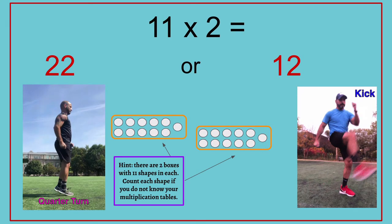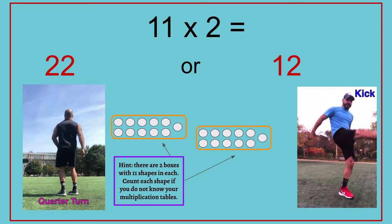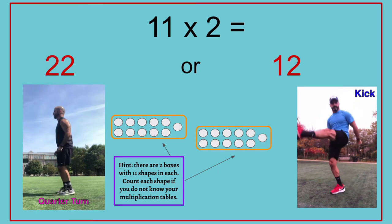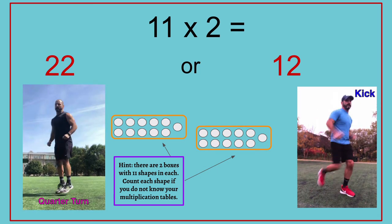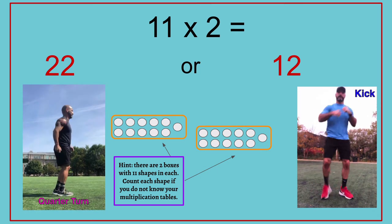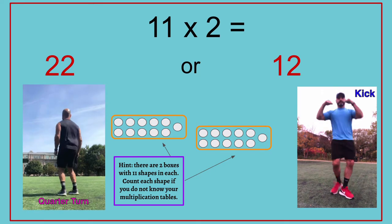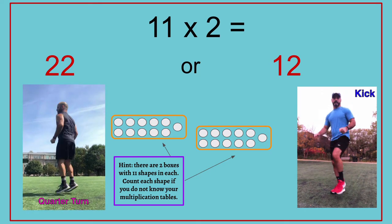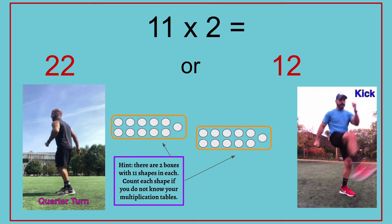11 times 2 equals — 22 or 12? There are two boxes with 11 shapes in each. Count each shape if you do not know your multiplication tables.